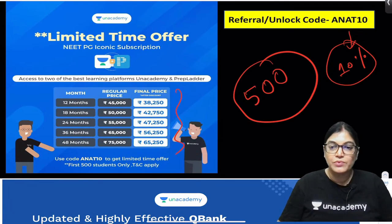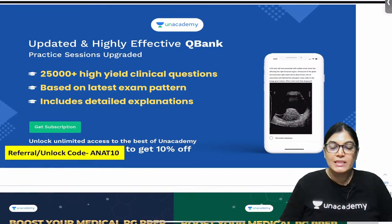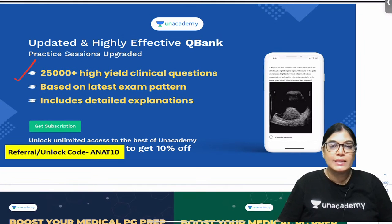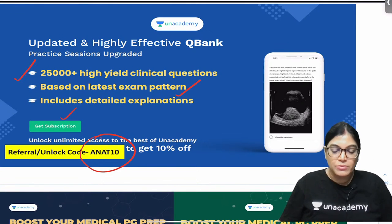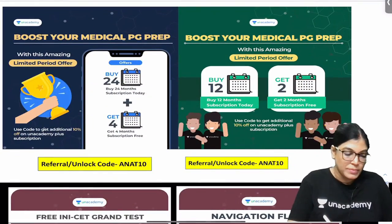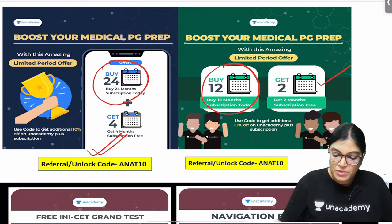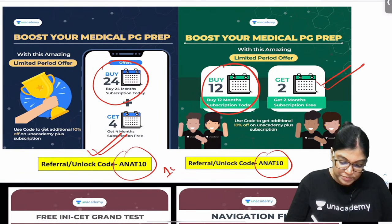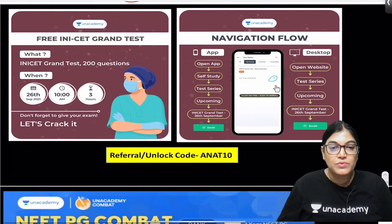The updated and highly effective Q-banks on Unacademy contain more than 25,000 high-yield clinical MCQs based on the latest exam pattern, with detailed explanations for each MCQ. Boost your preparation by taking two years of subscription and getting four months absolutely free, or 12 months with two months free. Use code ANAT10 for 10% discount.